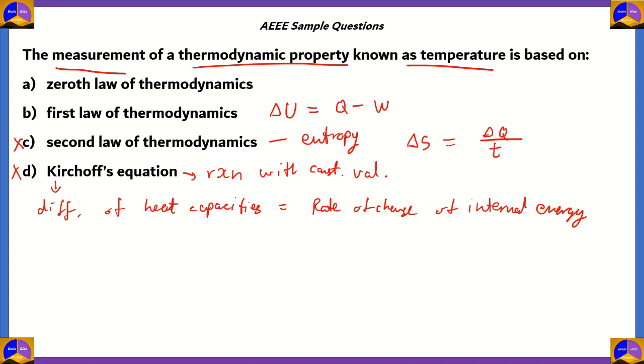It tells us how heat flows. Heat can be used either to do work or it can be used to increase the internal energy of the system. Therefore, option B again does not give us a good way of measuring temperature, so option B is incorrect. The correct answer is option A, the zeroth law of thermodynamics.